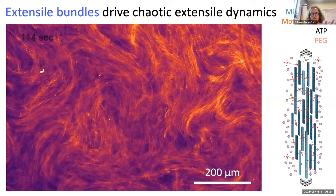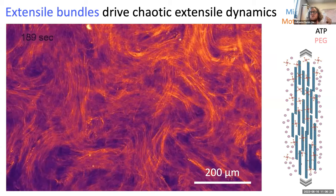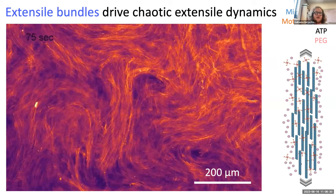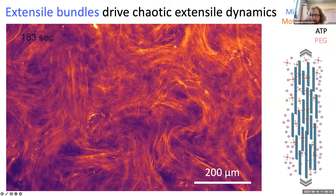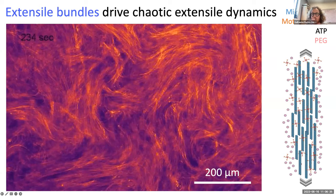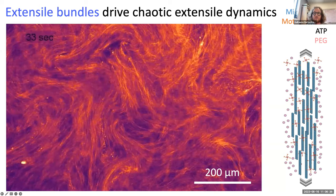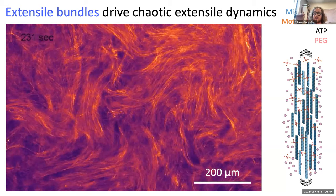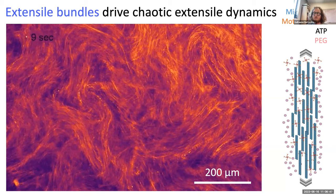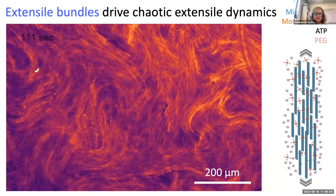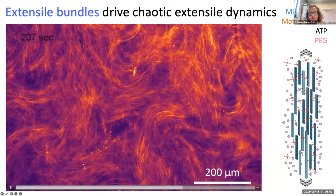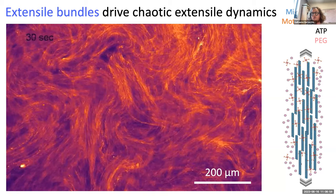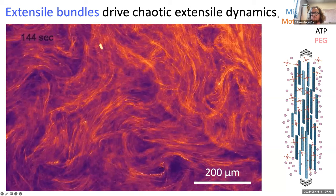With a very dense suspension of those extensile bundles, you see chaotic extensile dynamics — this is a prototypical movie of an extensile active fluid. You see bundles continuously elongating, bending, buckling, and reforming somewhere else. This emergent collective flow arises from a very simple material: just stabilized microtubules, clusters of kinesin-1 motors, ATP as chemical fuel, and a depletant. When I started my lab at Brandeis, one goal was to study how these emergent flows depend on the composition of the material.